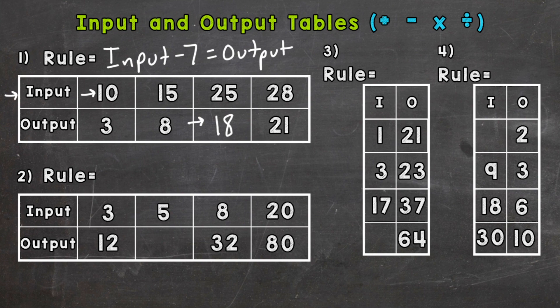We know 3 times 4 is 12. Let's try it for the others: 8 times 4 is 32, and 20 times 4 is 80. So our rule is input times 4 equals our output.